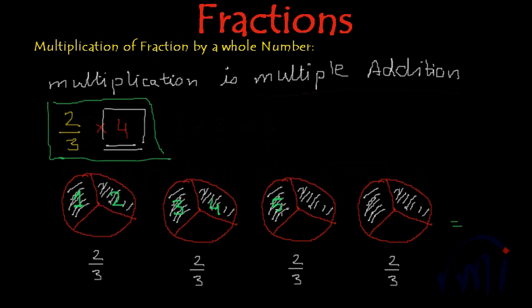...this is 5, this is 6, 7 and 8 portions. We have 8 portions of the circle where each circle is divided into 3 equal parts. So this was the method in which we are adding 2 by 3 four times.